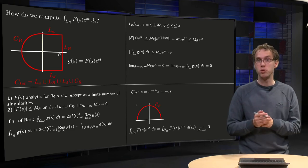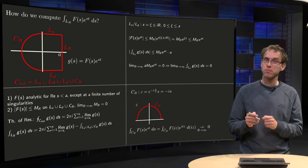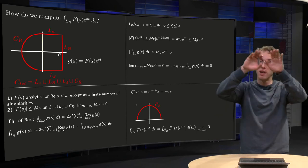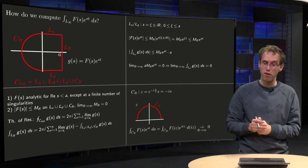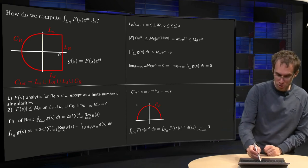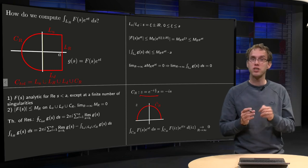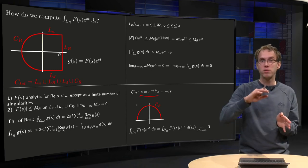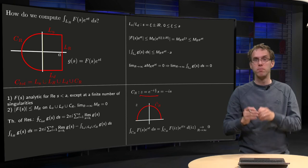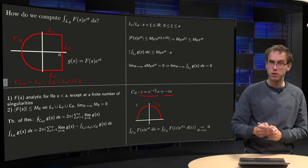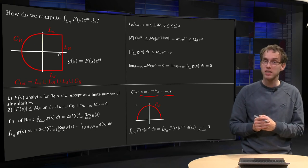We want to be able to use the lemma of Jordan for that, and we can, but the lemma of Jordan can only be used for the semicircle in the upper half plane. So we do substitution, z equals e^(-iπ/2·s), so we rotate our circle over minus 90 degrees, or that equals -is, or i·z equals s.